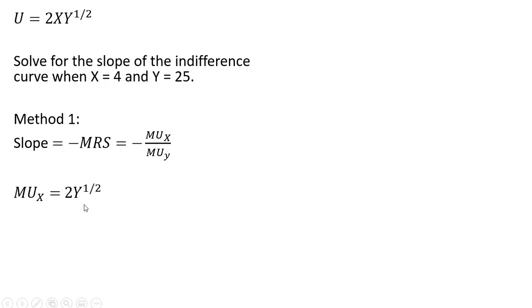We get the marginal utility of good x by taking the partial derivative of this utility function with respect to good x, and we get back y to the one-half power.